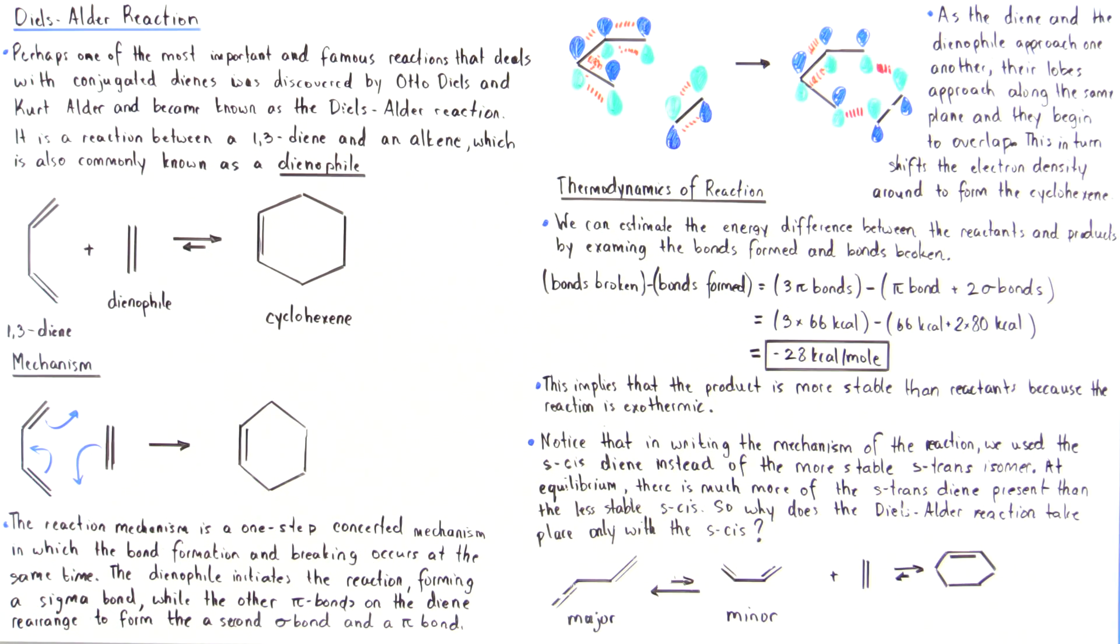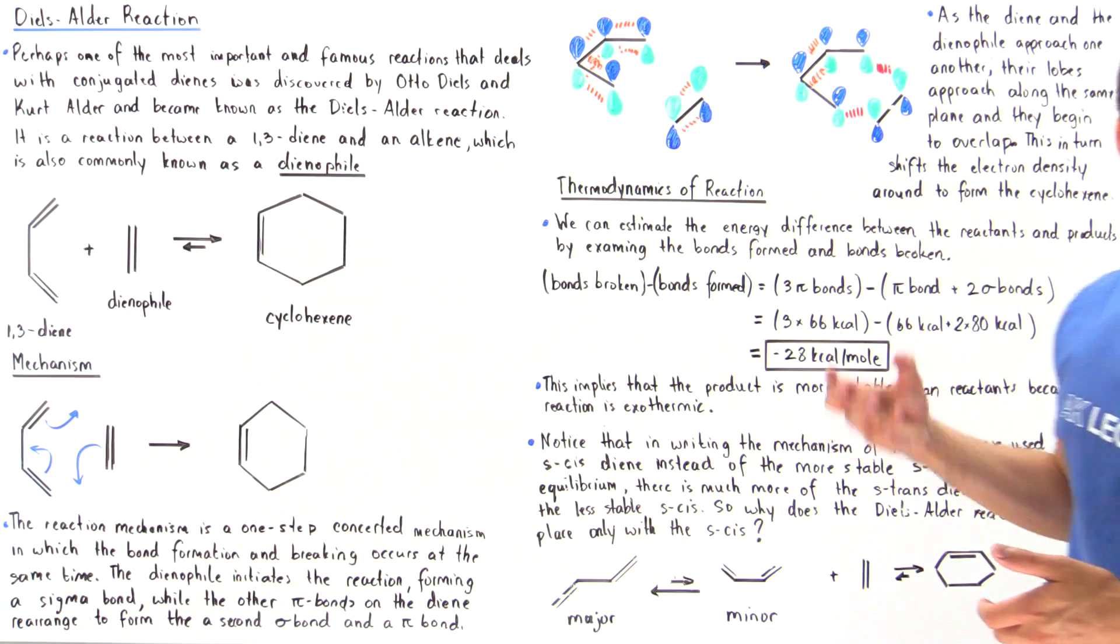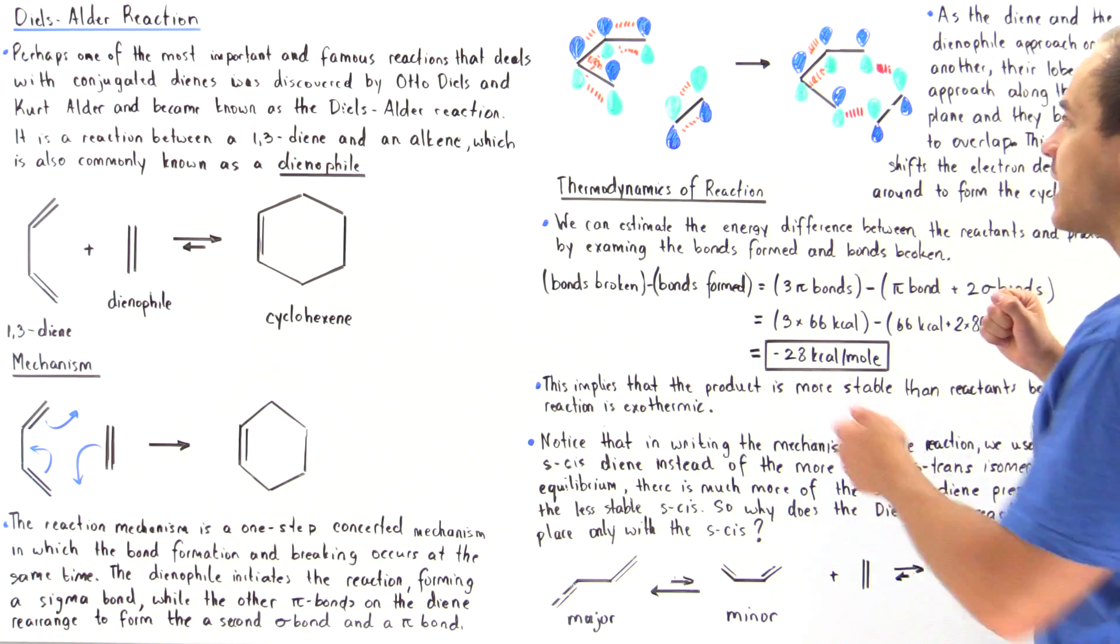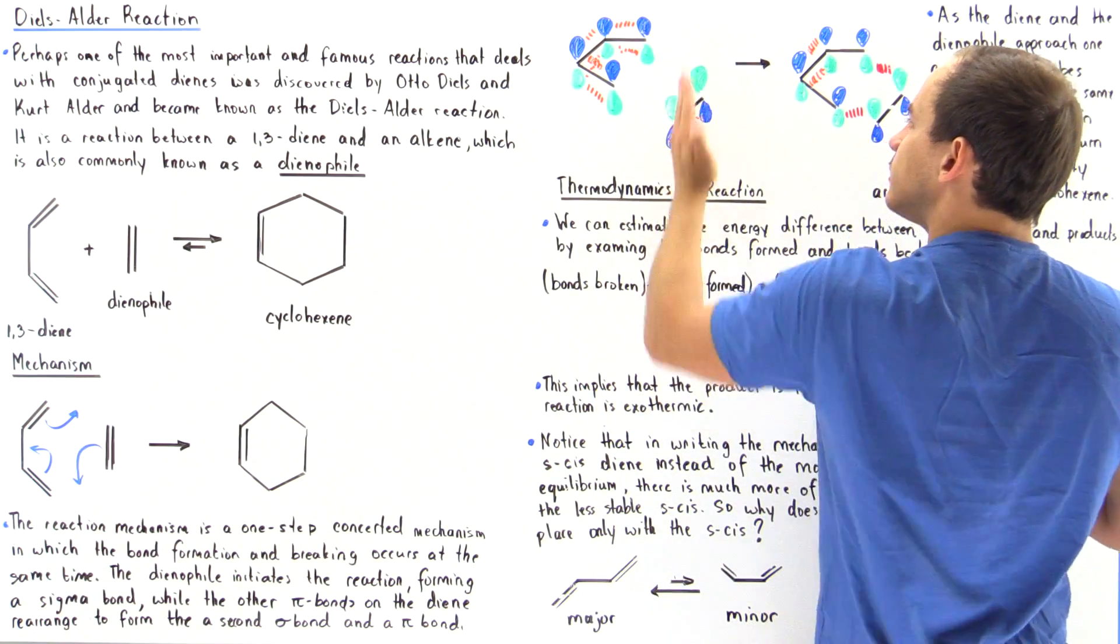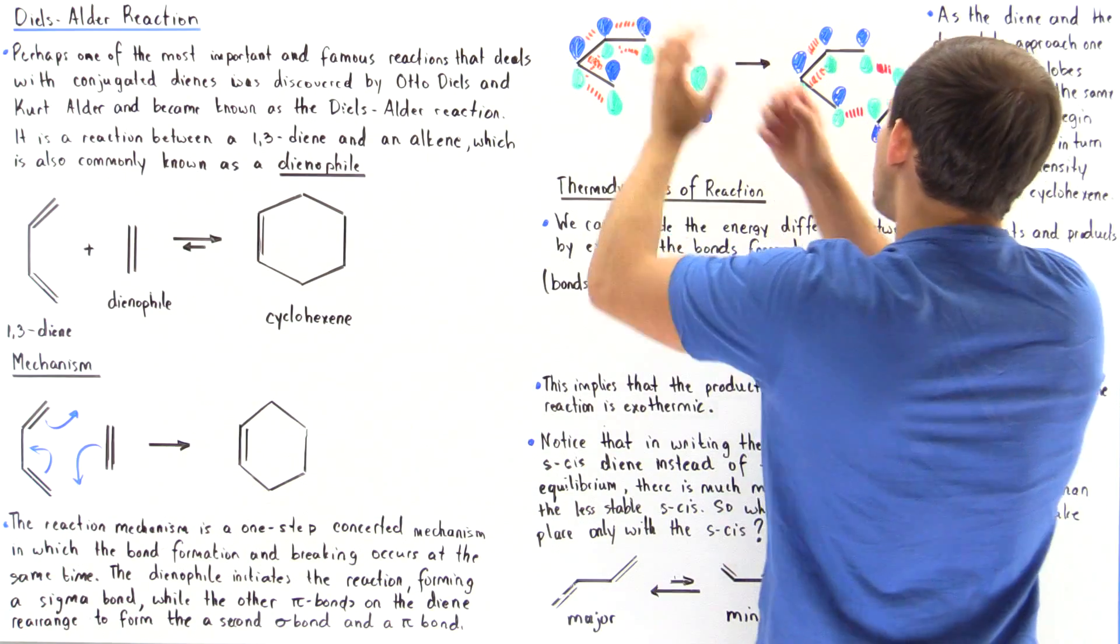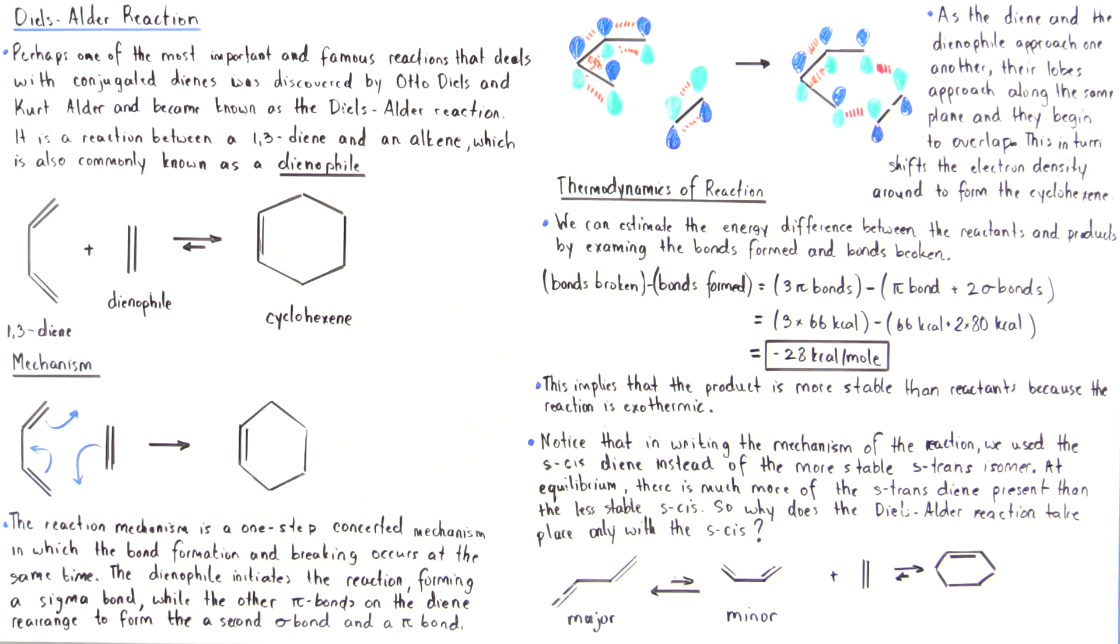So once again, as the diene and the dienophile approach one another, their lobes approach along the same exact plane. Notice that these lobes lie along this plane and these lobes also lie along the same plane so that the overlap is perfect. Now when this overlap takes place,